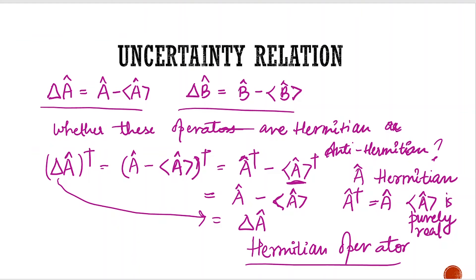Similarly, we can show the same for ΔB. So our uncertainty operators ΔA and ΔB are Hermitian in nature. Let's move on to the next topic.